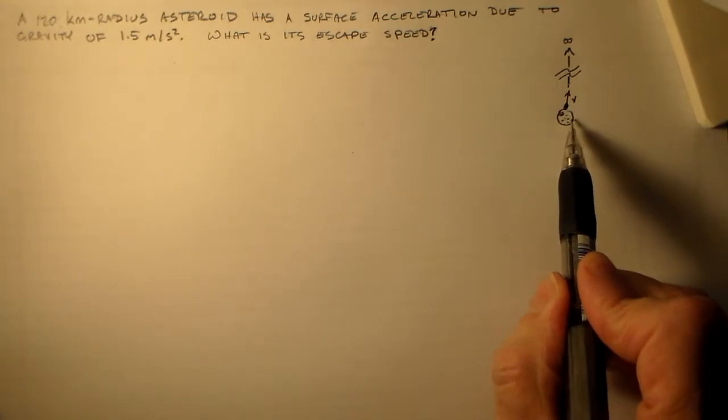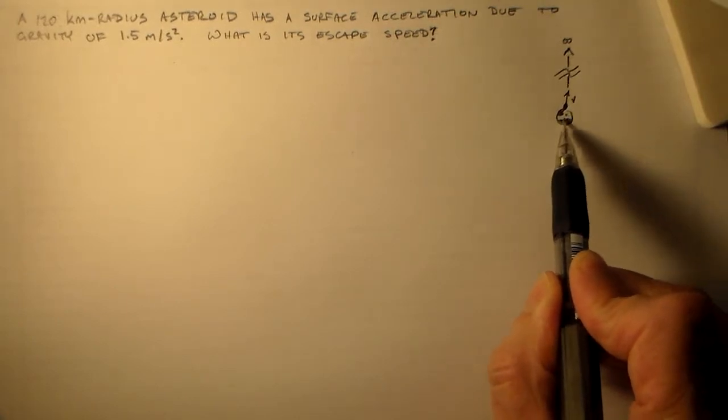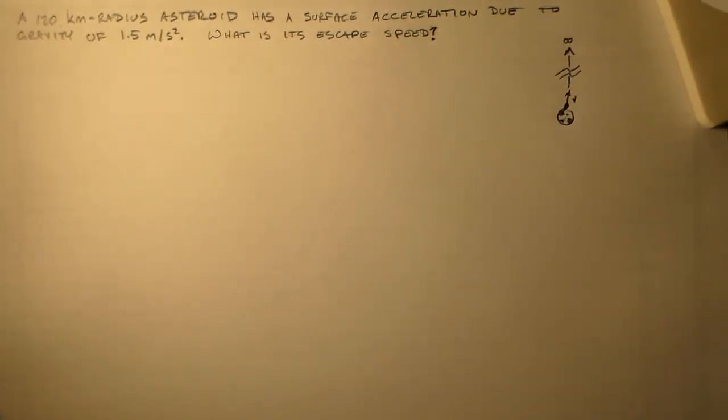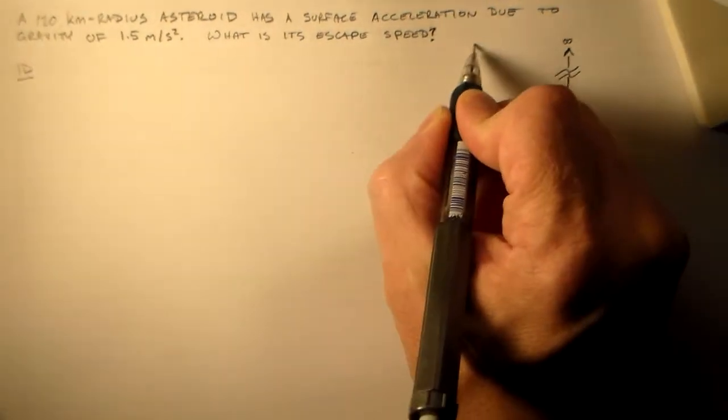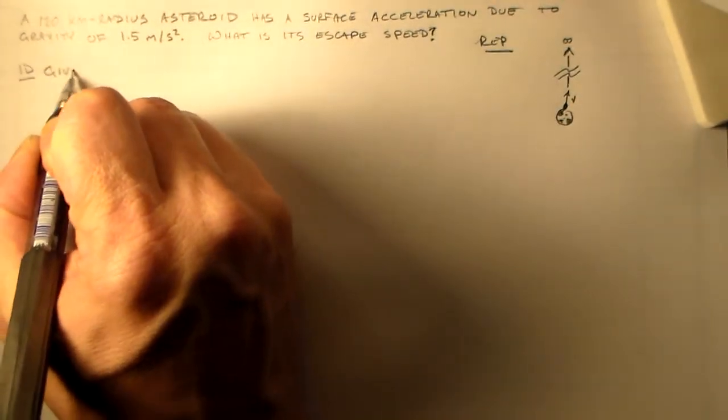So to escape, we say that the escape speed is the speed required to get an object up an infinite distance away from your object. All right. So let's see. What do I know about this thing? That was my representation over there. So I'm given an asteroid.